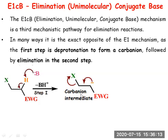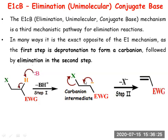Once the carbanion is formed, it is the conjugate base of the substrate — hence the name E1cB. This carbanion is stable because of the electron-withdrawing group, which stabilizes it. Then, in the second step, the carbanion undergoes elimination of the leaving group to form the unsaturated product.